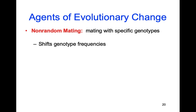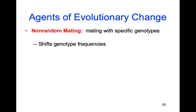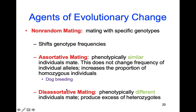Non-random mating will lead to evolution. Non-random mating means mating with specific genotypes, which will definitely shift genotype frequencies. This is essentially what Hitler wanted to do — he wanted a whole population of blue-eyed, blonde Germans and was trying to eliminate those with dark eyes and dark hair. That would have definitely changed gene frequencies of all those traits if he had succeeded.